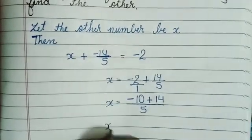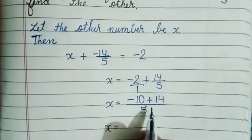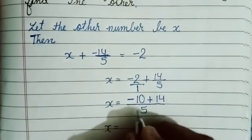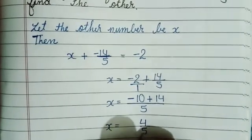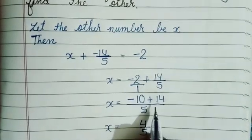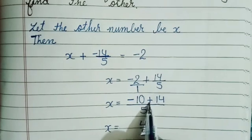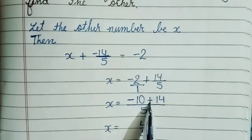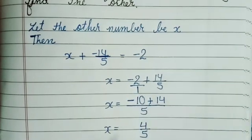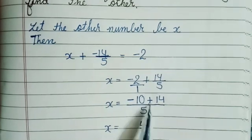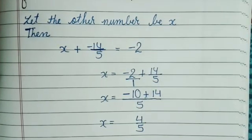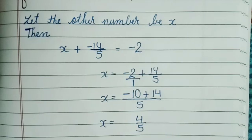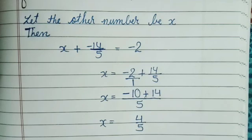Now x is equal to minus 10 plus 14, which gives us 4 upon 5. So 4 upon 5 is the value of x and x is the other number.